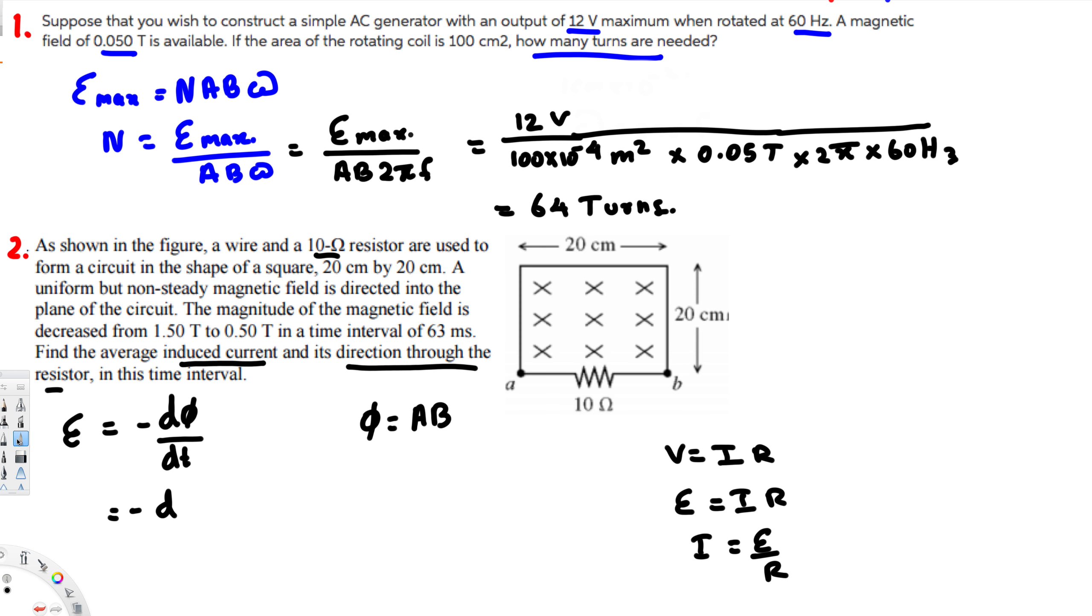Now we don't want this minus sign. To get rid of this minus sign, what we can do is: we know that delta B is always final minus initial, but if we subtract initial minus final, we can get rid of this negative sign. So dB is equal to: instead of subtracting 0.5 minus 1.5, I subtract 1.5 minus 0.5. So 1.5 minus 0.5 is 1, and that's going to eliminate this negative sign. Now we can plug 1 instead of dB.